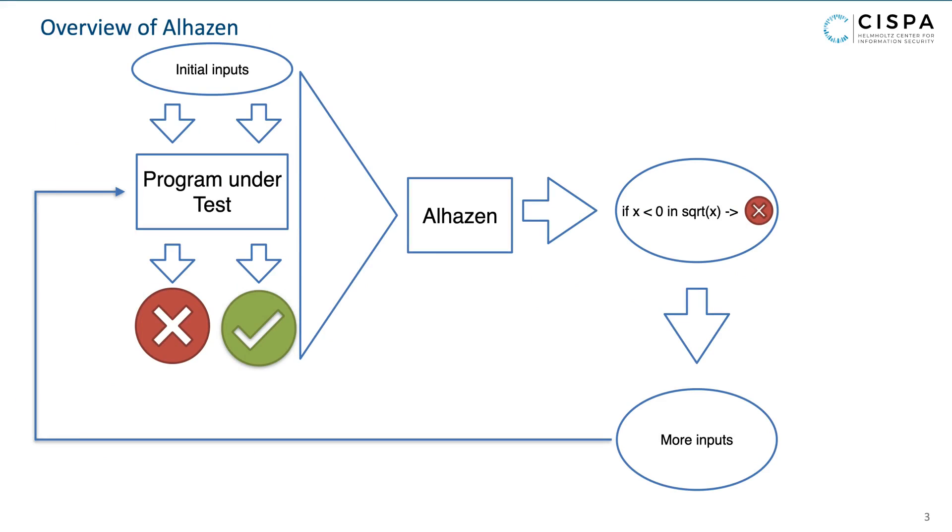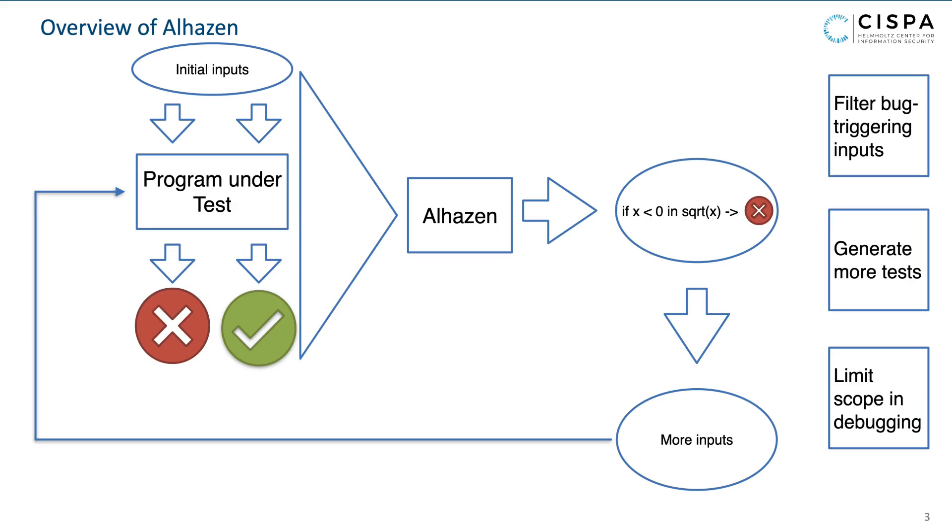Alhazen combines a decision tree learner and a test generator into a feedback loop to generate a model of program behavior, which can be used to filter bug-triggering inputs, generate more tests, and limit scope in debugging.